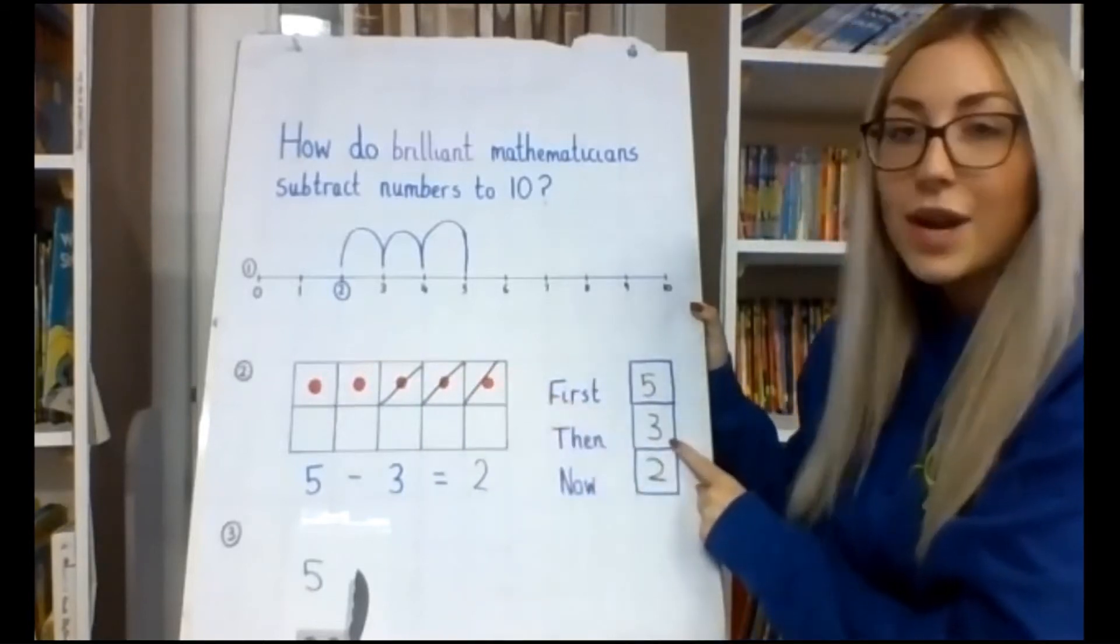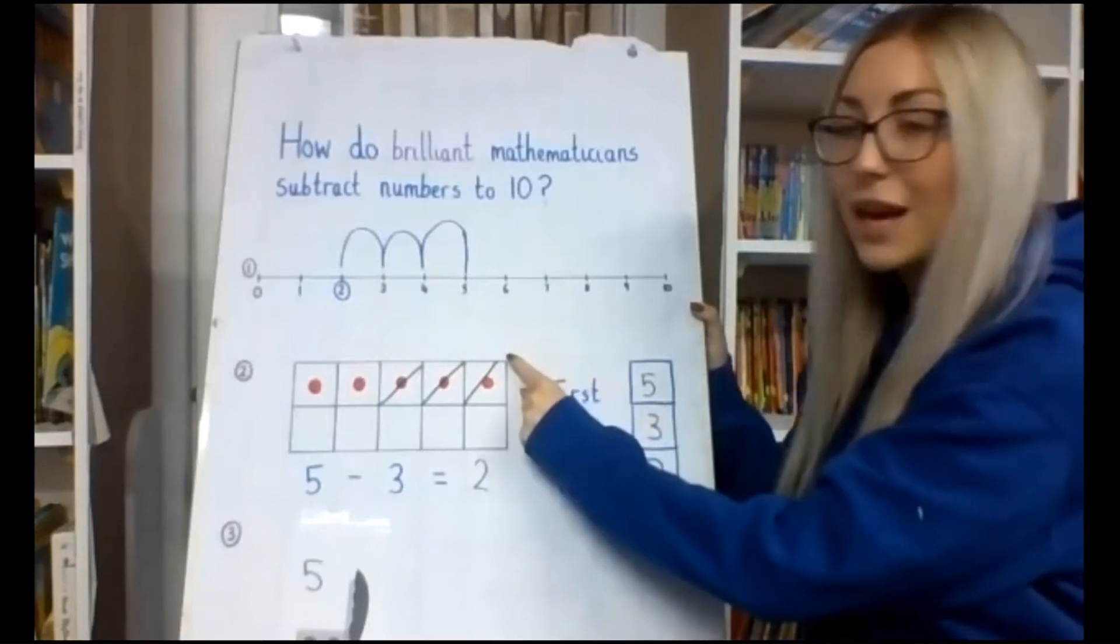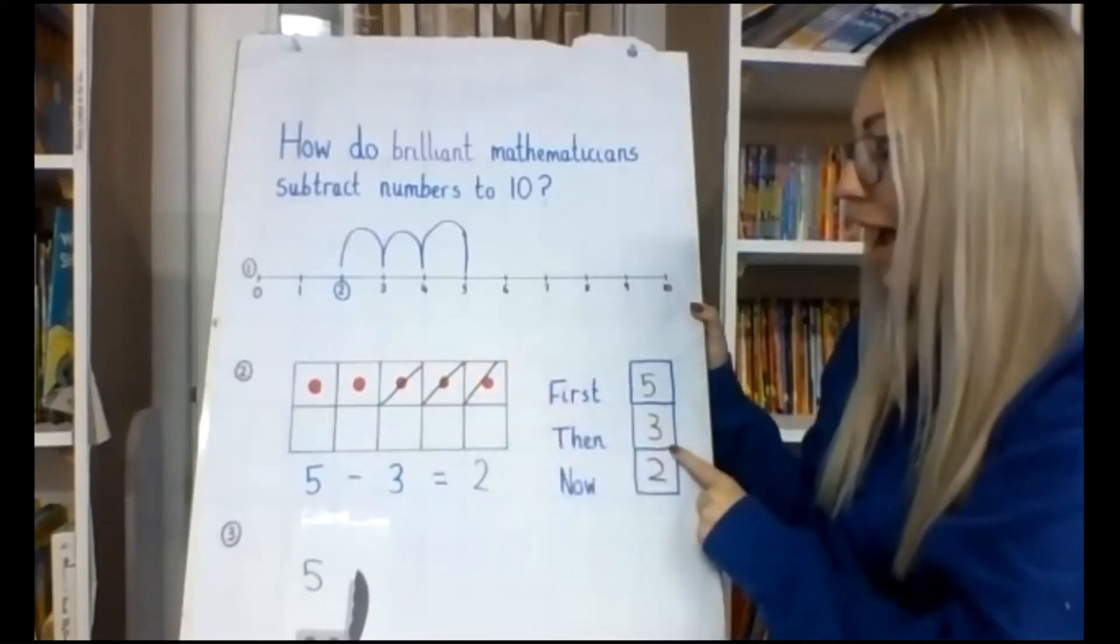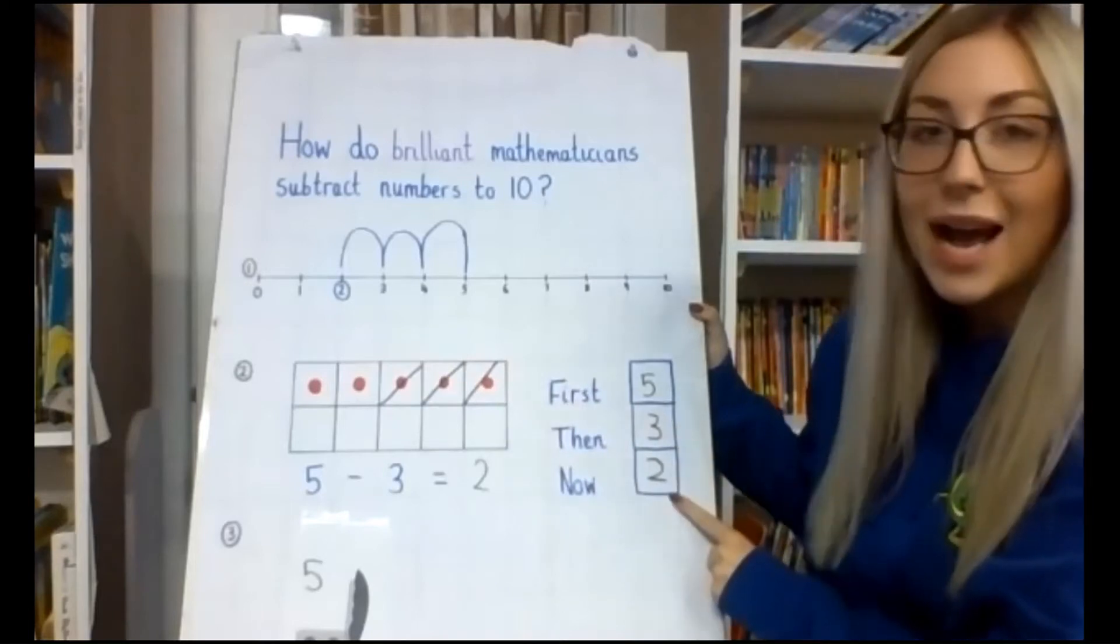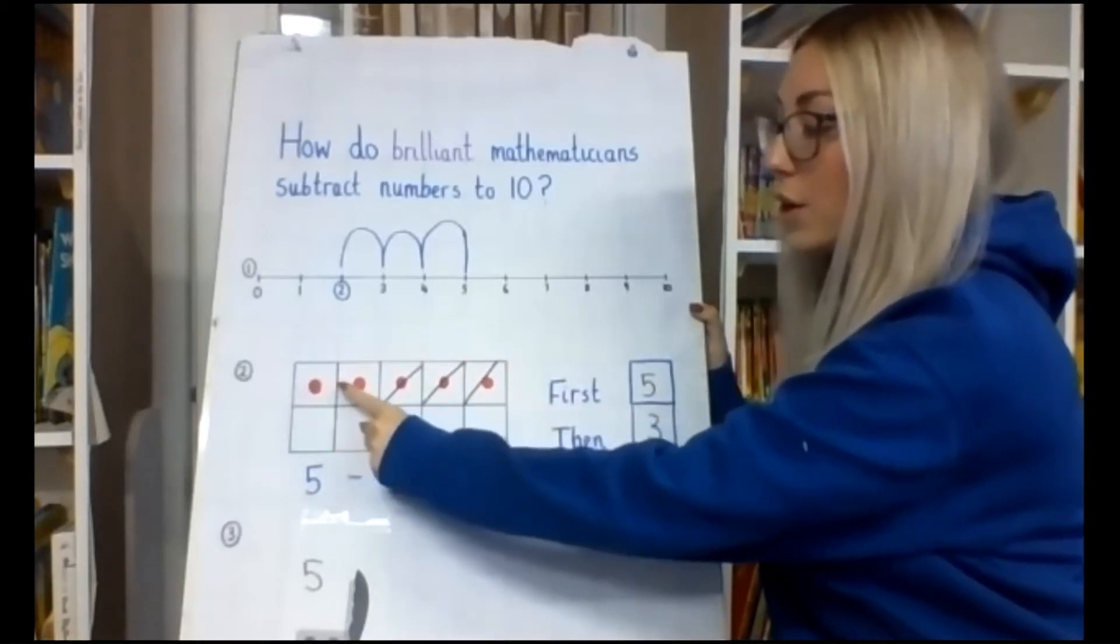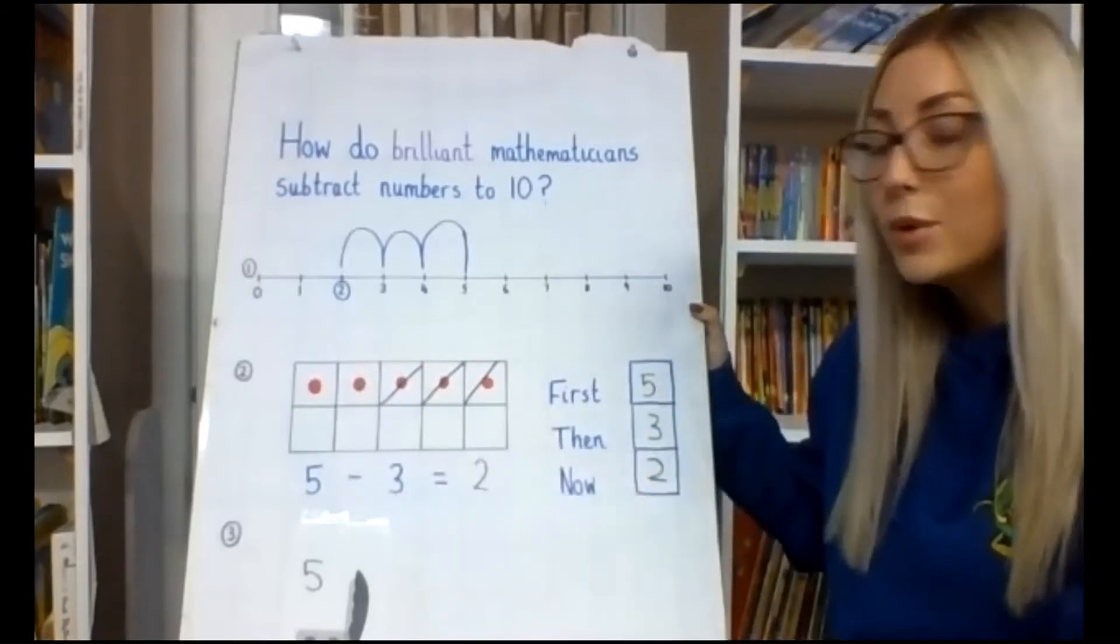Then 3 came off the bus. So we are going to cross out 3. 1, 2, 3. And then we are going to say now there are, and we are going to count, 1, 2, 2 people still on the bus.